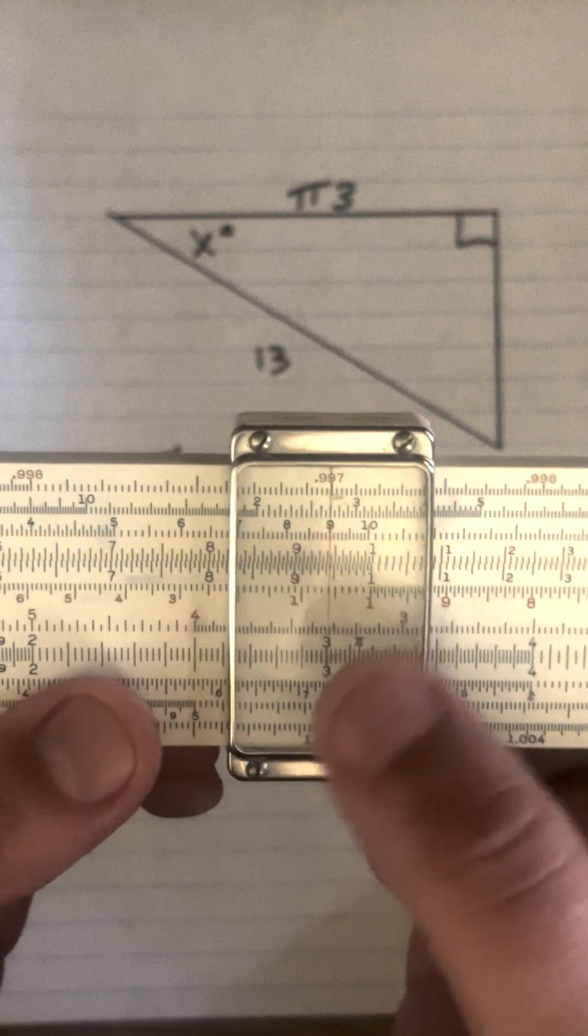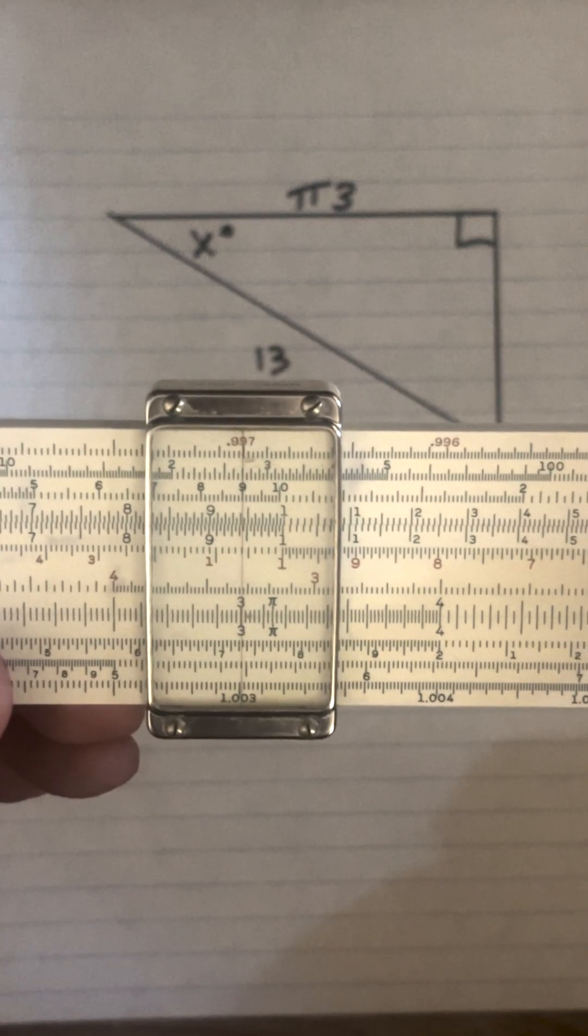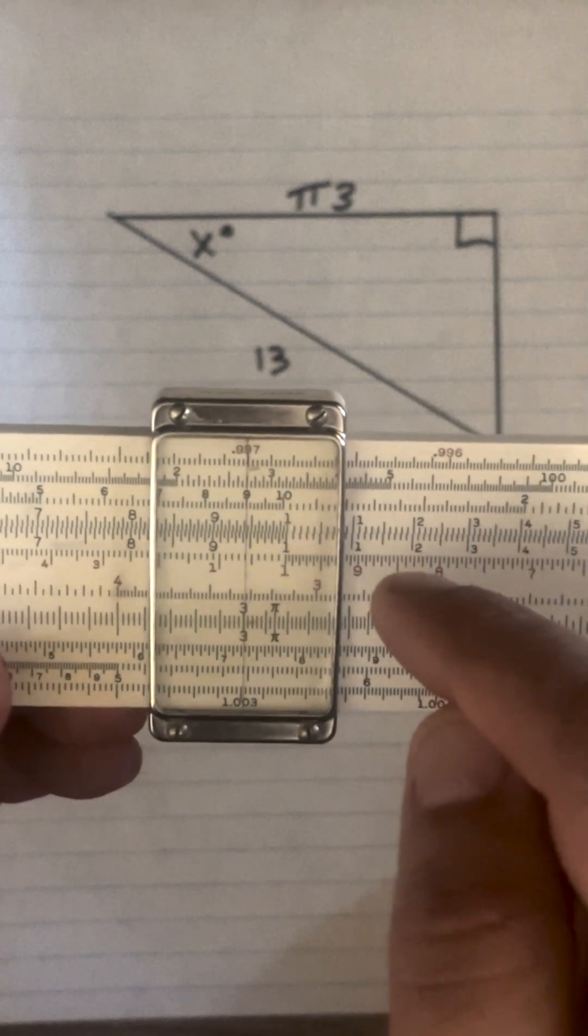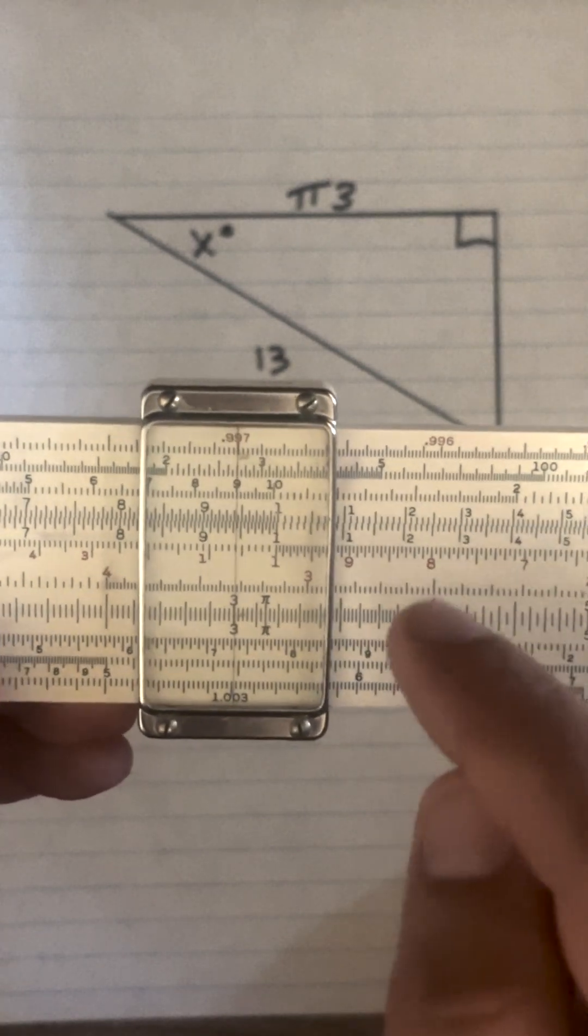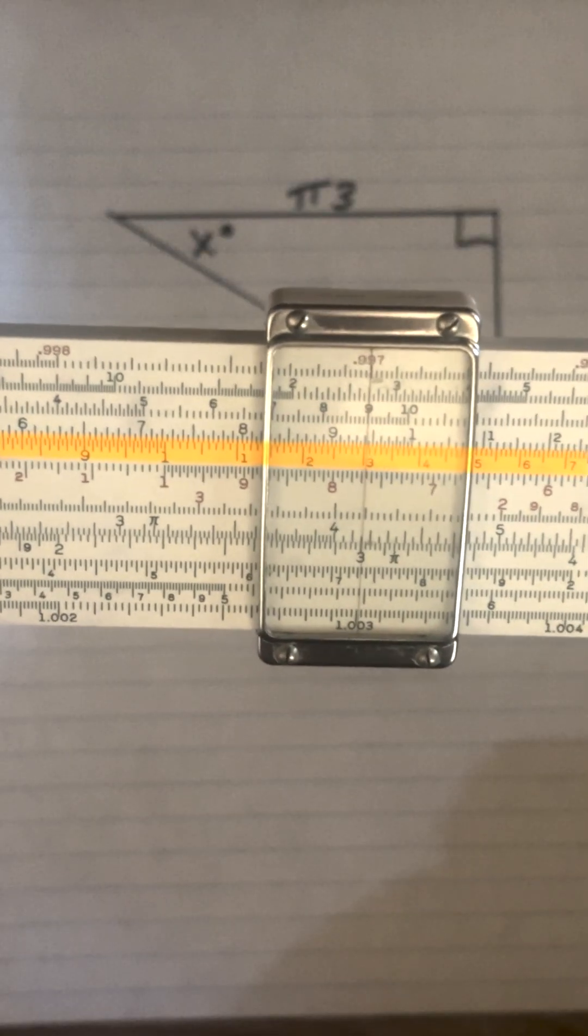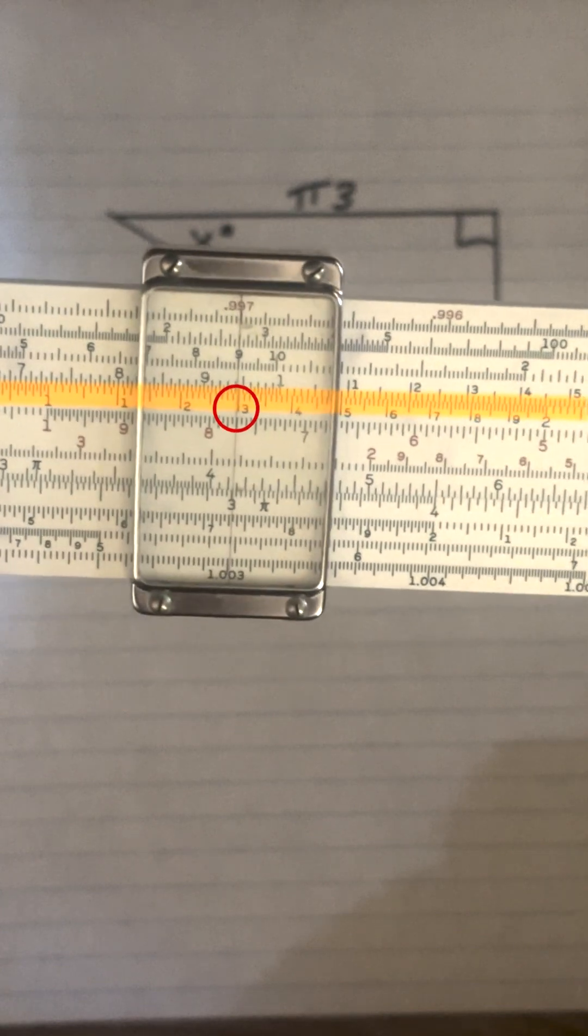Then because we're on the upper level of the slide, it works a little bit like the A and B scales in that when we do division, the numerator goes on top and the denominator goes on bottom, unlike when we do it on the C and D scales. So all I have to do now is on the CF scale, I will slide it to our hypotenuse, which is 13.